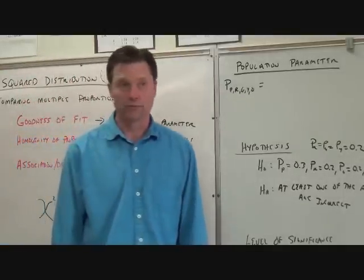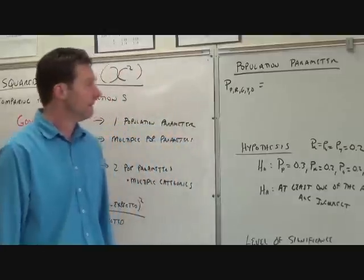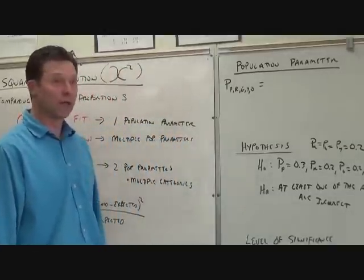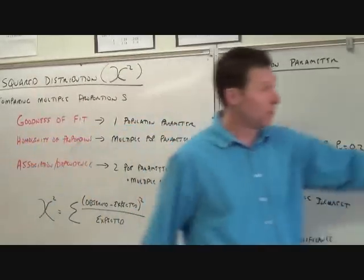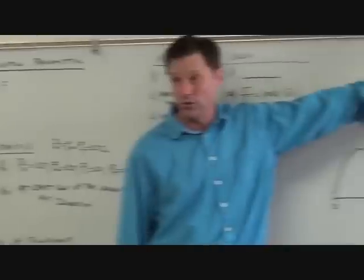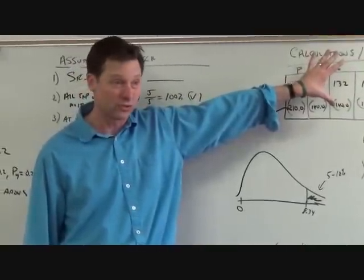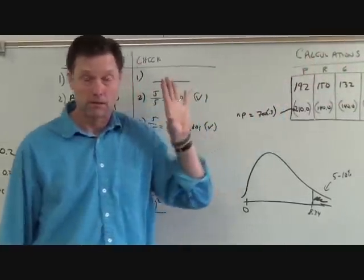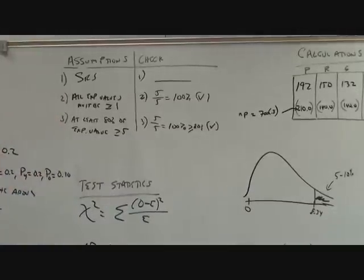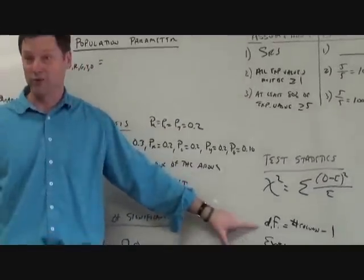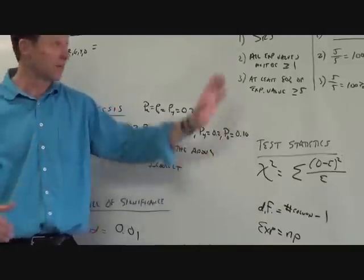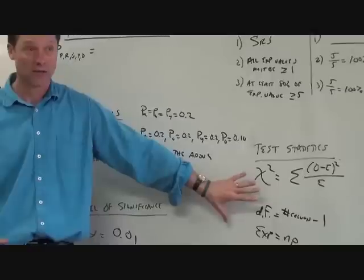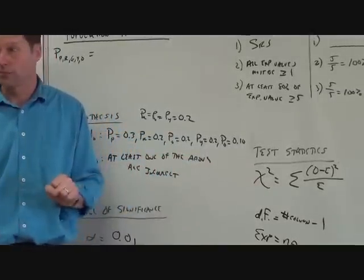Two big areas where people lose points: first, people want to put the percentages in the box — don't, these need to be the counts. Second, people want to use 700 minus 1 for degrees of freedom — no, it's not the sample size minus 1, it's the number of categories we're looking at.